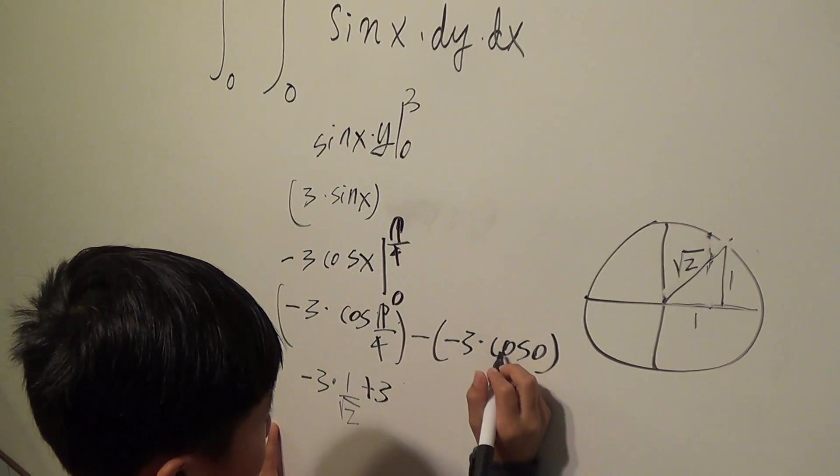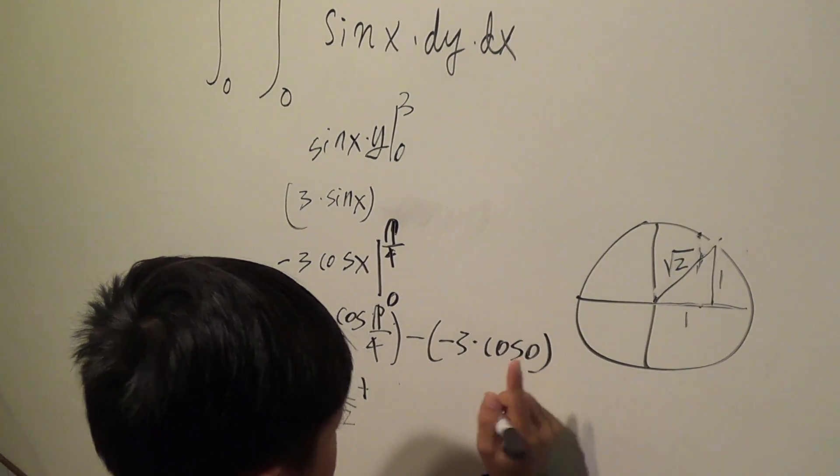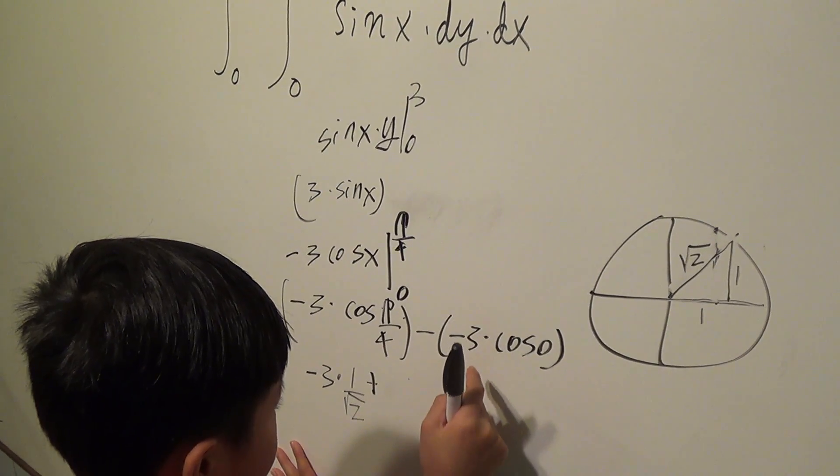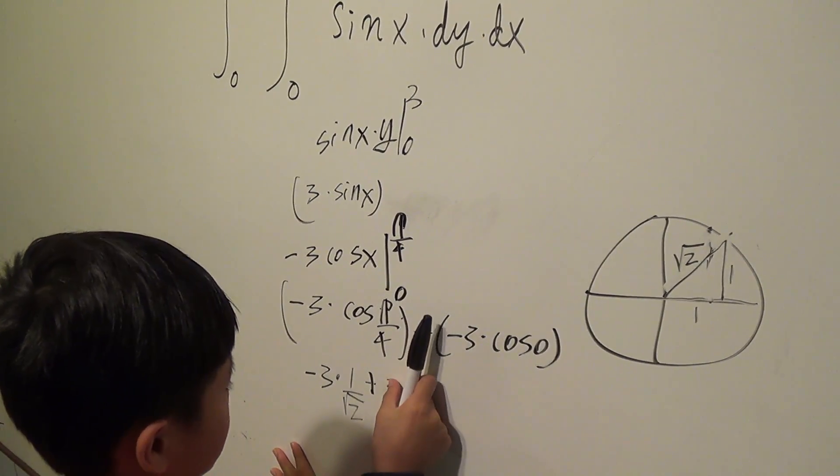And because cos 0 is 1, so 1 times 3 is pretty much the same, which is 3, and then you're done.